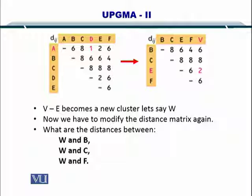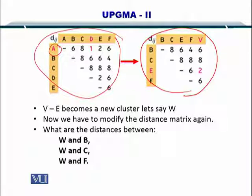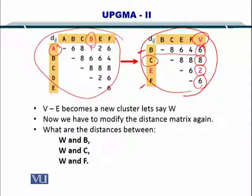Here this distance matrix is replaced by this distance matrix. You can see that there is no A here, there is no D here. But there is a new column that is V. The distance between V and B is 6, V and C is 8, V and E is 2, and V and F is 6. So essentially this distance matrix has been converted into an updated distance matrix.